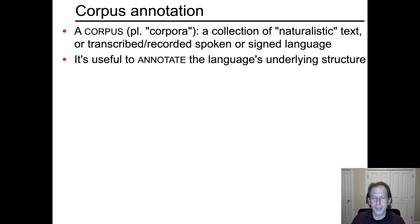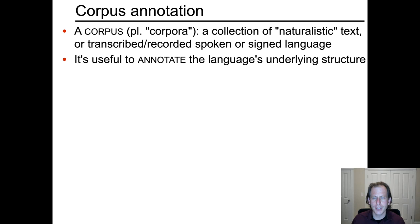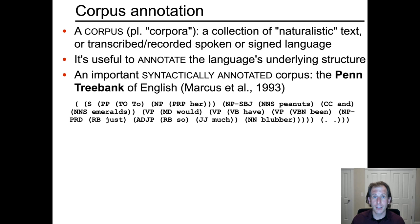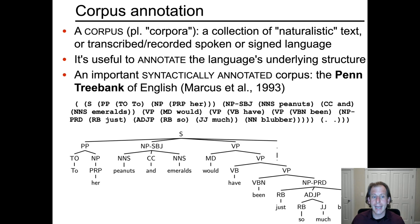Once we have a corpus, it's useful to annotate it for its underlying properties. Here we're going to look at a historically and even now very important corpus — the Penn Treebank of English — which has syntactic annotations. This is an illustration example sentence from the corpus. You can read off the words: 'To her, peanuts and emeralds would have been just so much blubber.' The brackets and labels indicate the syntactic structure, with a straightforward one-to-one relationship to a syntactic tree with a context-free tree.